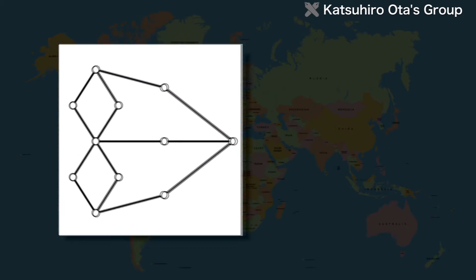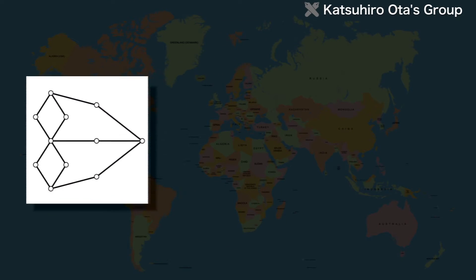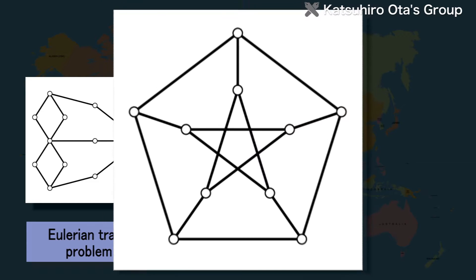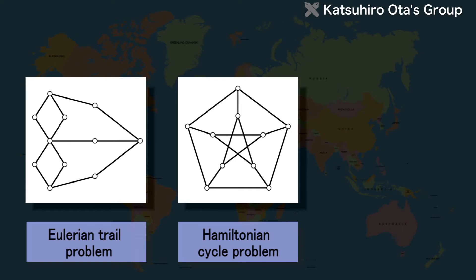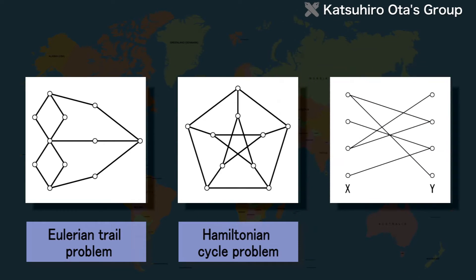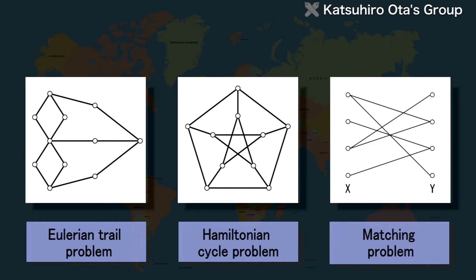Other problems in graph theory include the Eulerian trail problem, which is to find a trail passing through every edge exactly once; the Hamiltonian cycle problem, which investigates whether there exists a path that passes through every vertex of a graph exactly once; and the matching problem, where the goal is to create as many vertex pairs linked by edges as possible.